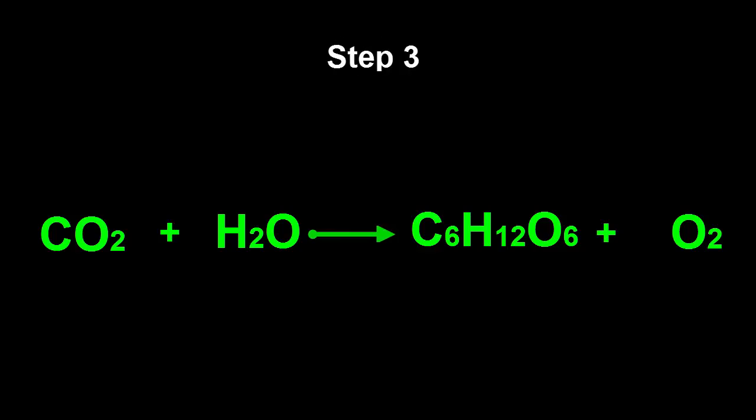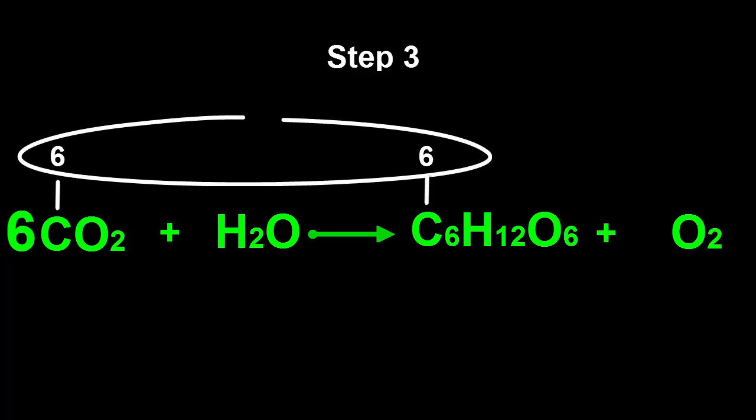Step 3: We'll start with carbon, and you can pause the video now if you want to try it yourself first. There is only one carbon atom on the left-hand side, but six on the right-hand side. Put a six in front of the CO2. Carbon is balanced.